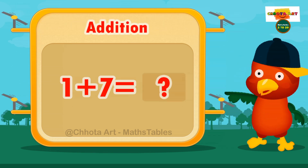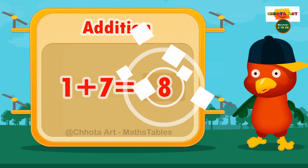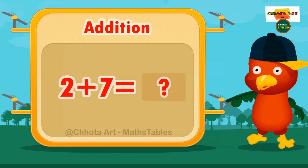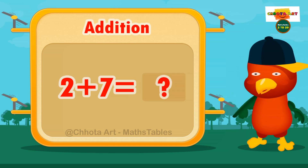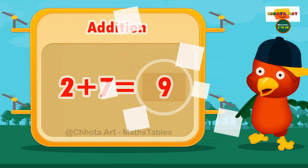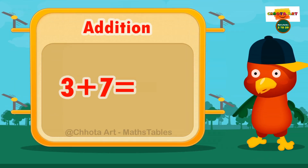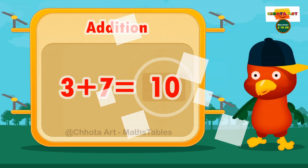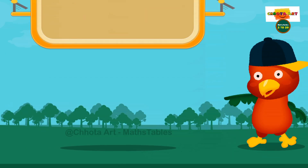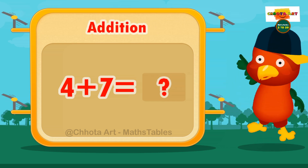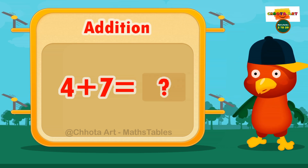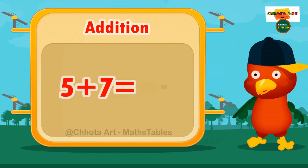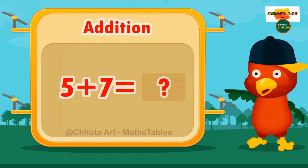1 plus 7 equals 8. 2 plus 7 equals 9. 3 plus 7 equals 10. 4 plus 7 equals 11. 5 plus 7 equals 12.